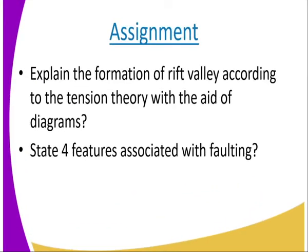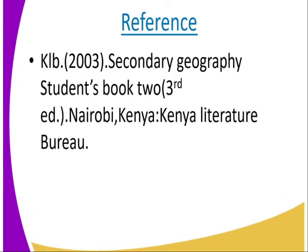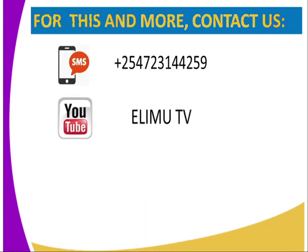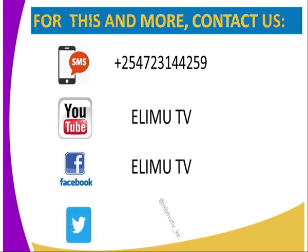For the activity, you are required to explain the formation of a rift valley according to the tension theory with the help of diagrams. At number 2, list 3 to 4 features associated with faulting. For reference, you can refer to KERB 2003, Secondary Geography Student Book 2, third edition. You can also reach us via SMS, YouTube, Facebook, or Twitter. Stay tuned to ERIM TV. Thank you.